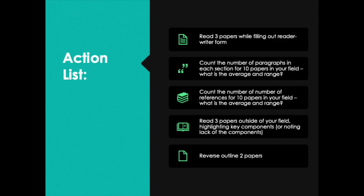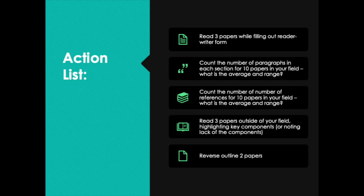Action item number two is to take 10 papers from your field and start counting the number of paragraphs in each section. Make a spreadsheet in Excel or Google Sheets and keep track: how many paragraphs are in the introduction, in materials and methods, in results, in the discussion. Then calculate the average number and look at the range — what's the fewest and what's the most number of paragraphs — to give you a benchmark for what is normal in your field.